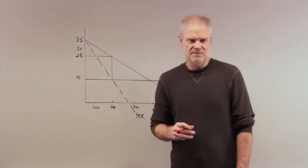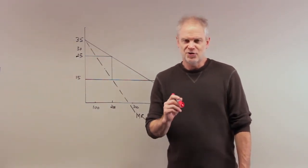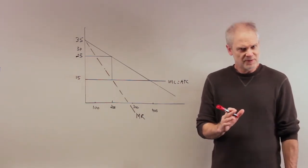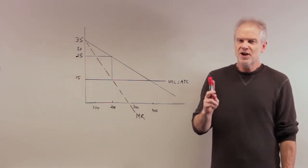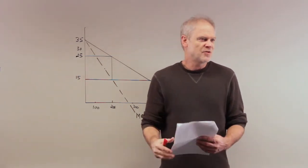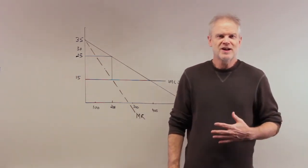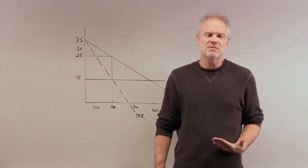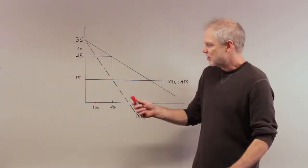Now, what does perfectly price discriminate mean? That means that you charge everybody their willingness to pay. A little bit strange, a little bit extreme, of course. But everybody, you're a salesperson at a store, you're at Best Buy, and you've got this device that when they walk through the door, you can read their minds.